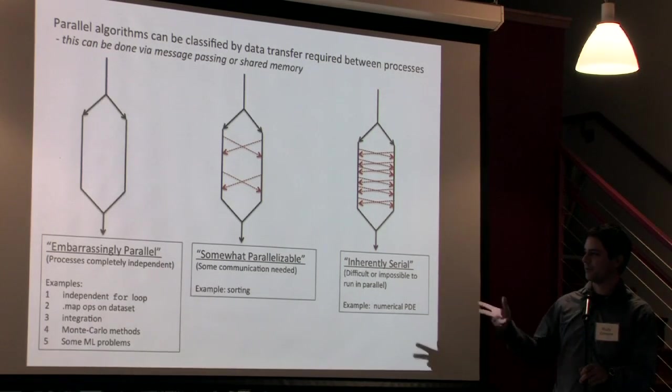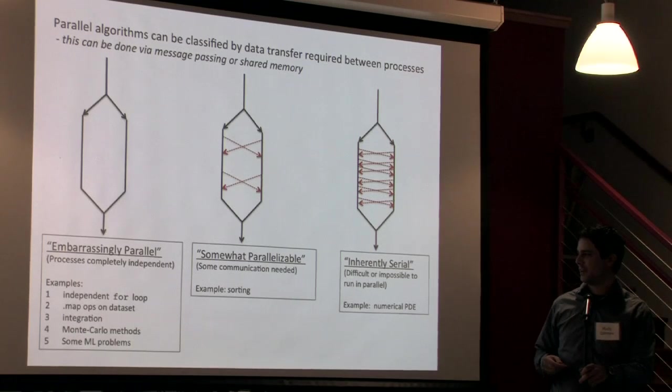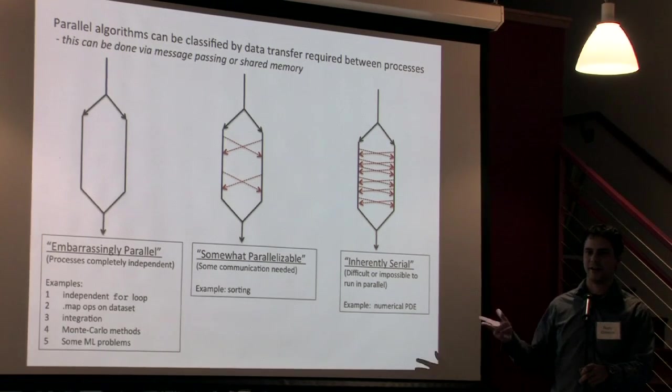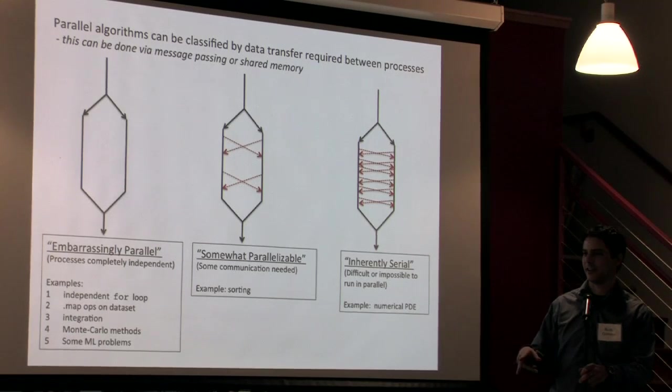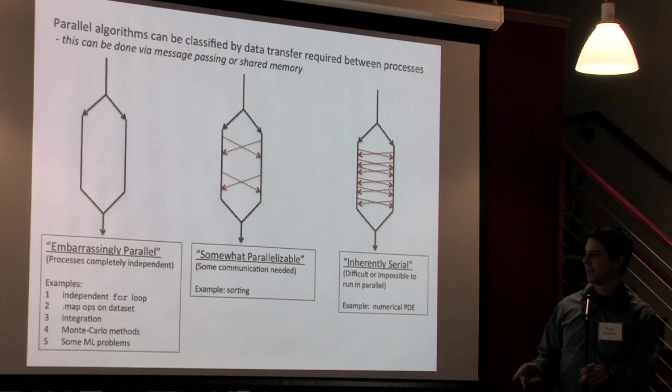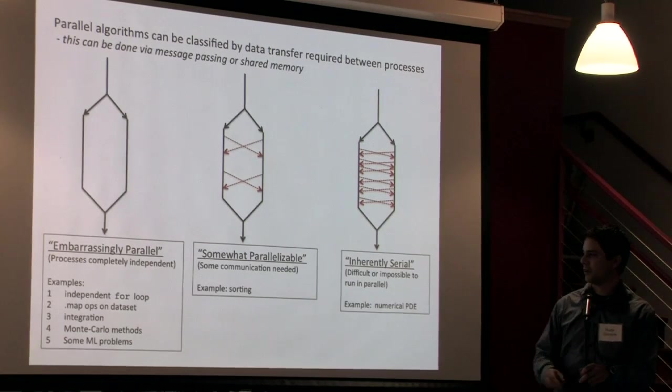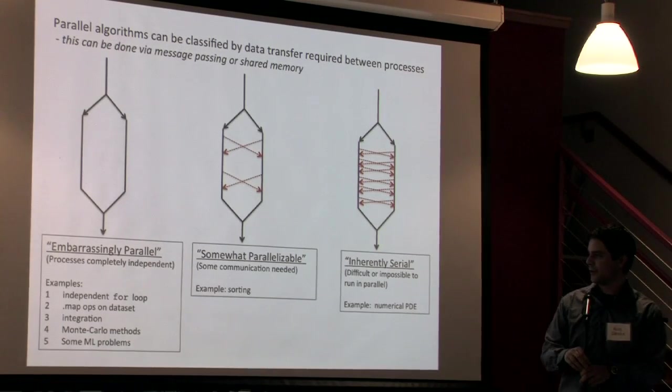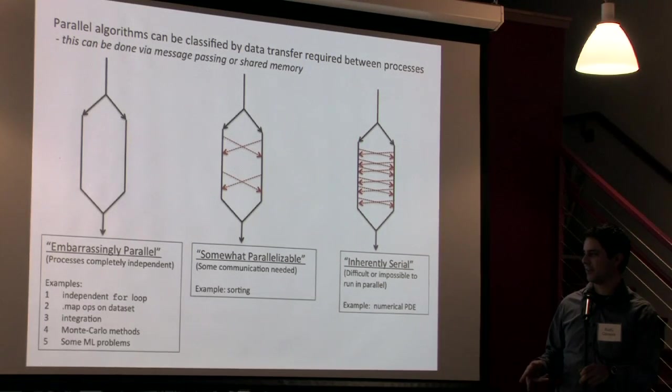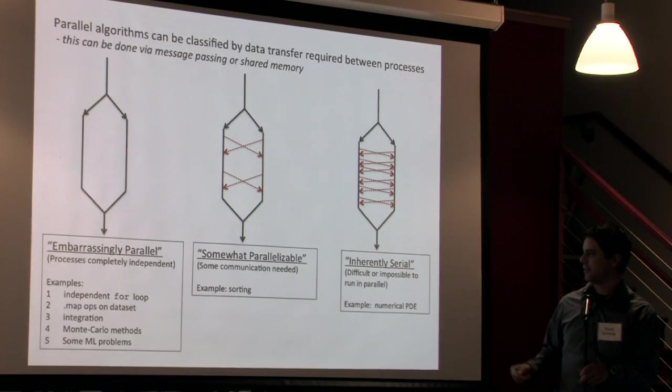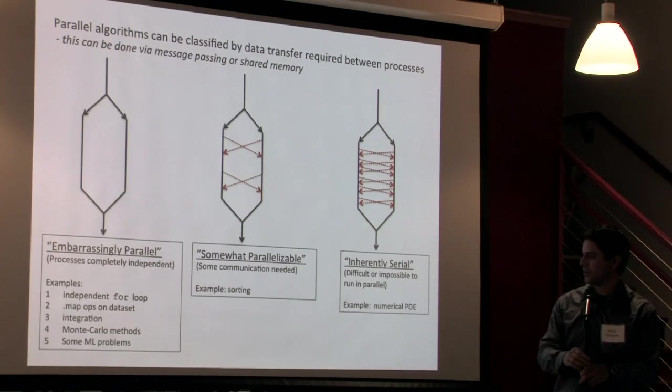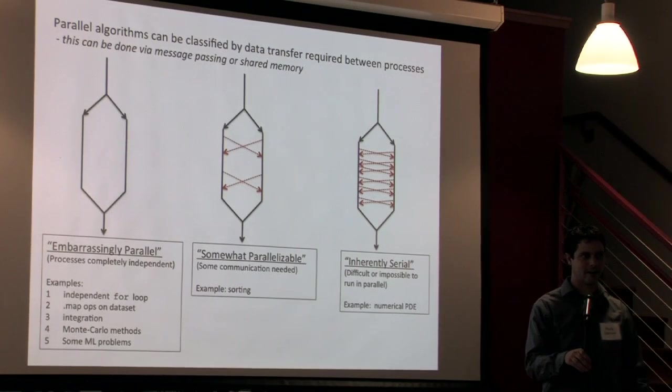Anything that's like an independent for loop where the 60th iteration doesn't need to talk to any of the other iterations that come before or after it, that's an embarrassingly parallel problem. Anything like a mapped or map reduced type operation on a data set, if you're just doing like an integration or Monte Carlo some sort of numerical methods like that, those are very easy to put into parallel and also some types of machine learning problems also fall into this category.